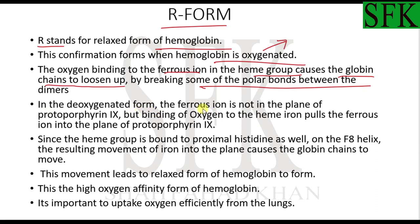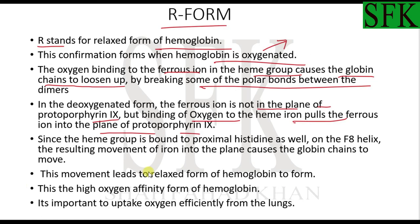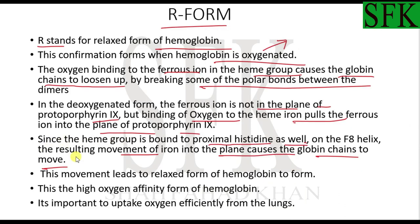In the deoxygenated form, the ferrous ion is not in the plane of the protoporphyrin ring, but binding of oxygen to the heme iron puts the ferrous ion into the plane of the protoporphyrin ring. Since the heme group is also bound to the proximal F8 histidine on the F8 helix, the resultant movement of iron into the plane causes the globin chains to move. The heme group moves the proximal F8 histidine with it, and this movement breaks some bonds and allows the dimers to move relative to one another.